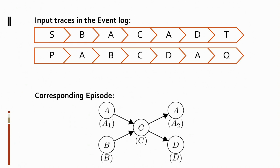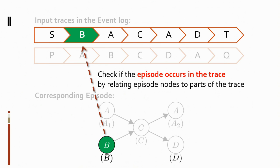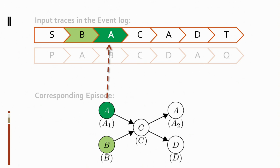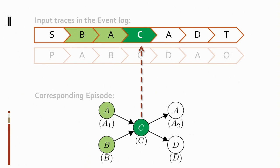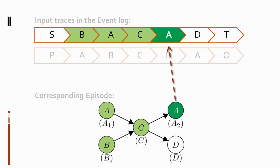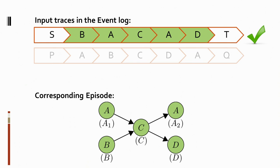How do we discover episodes from an event log? The basic idea is to construct partial orders and check if they occur in traces in an event log. Take for example this episode and the first trace shown here. To check if an episode occurs in a trace, we relate episode nodes to parts of a trace. The first node B is related to the first B in the trace. We continue doing this for the other nodes in the episode as well. The first A in the episode is related to the first A in the trace, the C's are related, and the second A is related to the second A in the trace. And also the D's are matched.